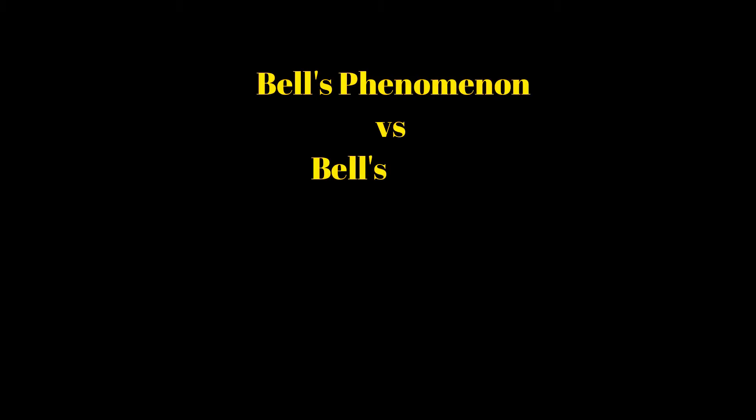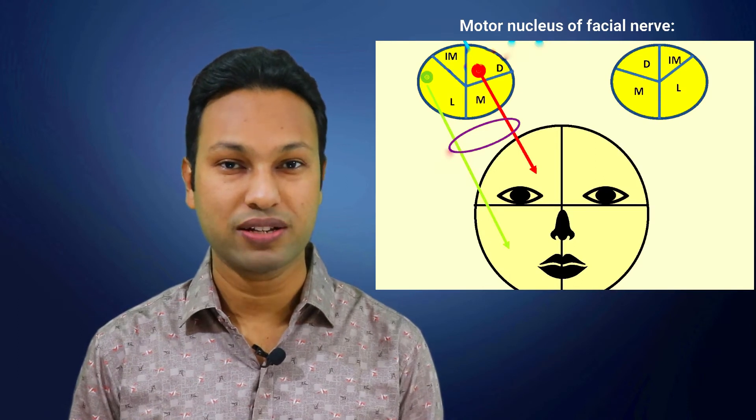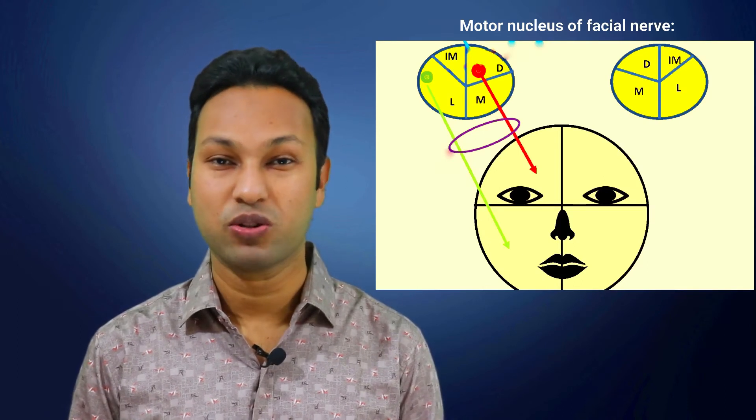So why does Bell's phenomenon happen? What is its relationship with upper motor neuron and lower motor neuron? We will discuss it today. First we have to know about the motor nucleus of the facial nerve. The motor nucleus of the facial nerve is located at the pons, and it has two parts: the supranucleus and the infranucleus.